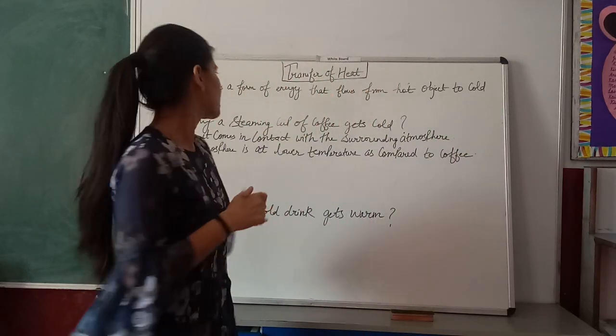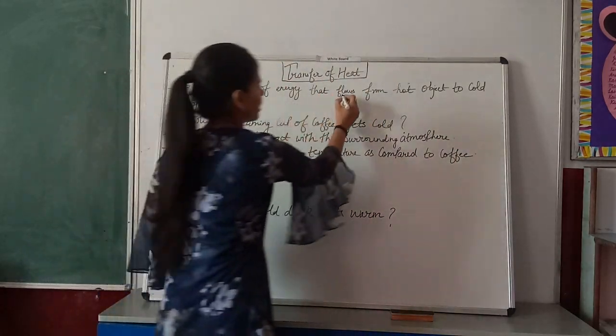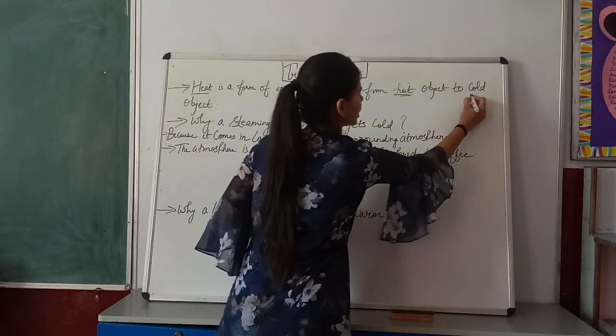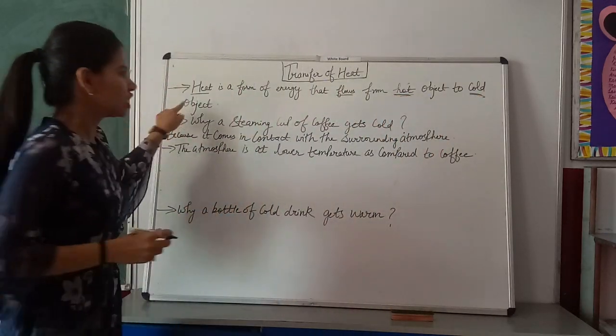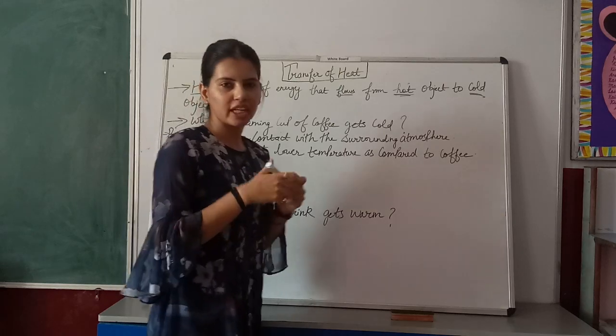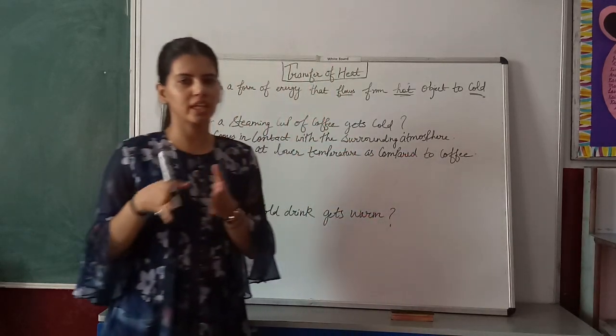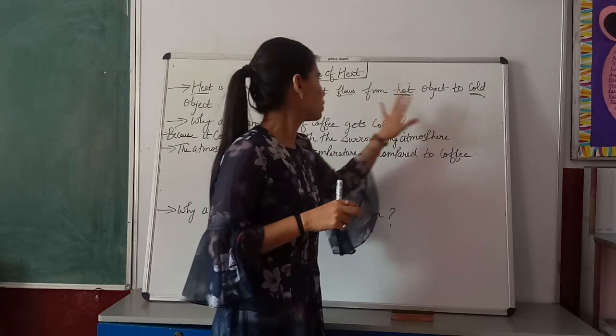And how does it flow? Heat is a form of energy that flows from hot object to cold object. Heat always flows from hot to cold object, never from cold to hot. That is hot to cold.